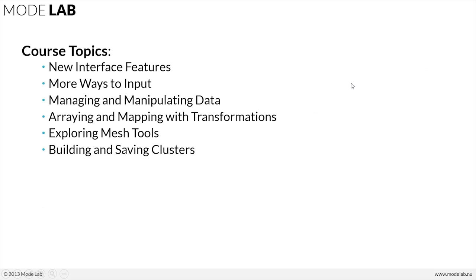The course topics we're going to track through today are the new interface features, more ways that you can input in Grasshopper version 9, and how we can go about managing and manipulating data within this version. Furthermore, we're going to look at how we can array and map geometry from one location to another using transformations, as well as how the additional mesh components will allow us to explore working with meshes. And lastly, we're going to build and save our own clusters.